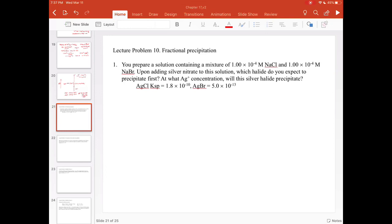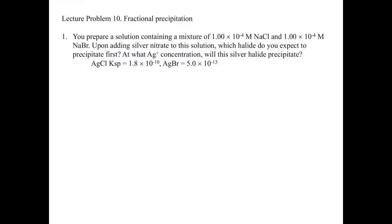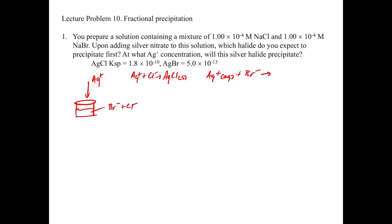This is a bit different because now we have bromide and chloride in our beaker, and we're adding silver to see if we can precipitate two different silver salts. One possible precipitation: Ag⁺ + Cl⁻ → AgCl(s). The other: Ag⁺ + Br⁻ → AgBr(s). The question is which one precipitates first and at what concentration.